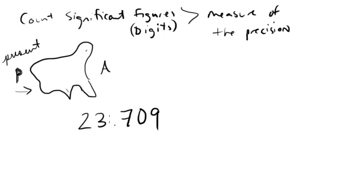This is what I mean. For 23.709 we start counting here. Okay, we hit a non-zero digit, so we have one, two, three, four, five sig figs. So the answer here would be five sig figs.